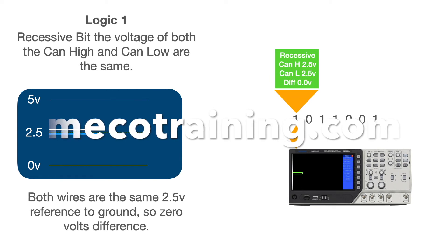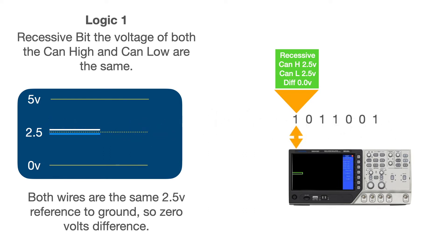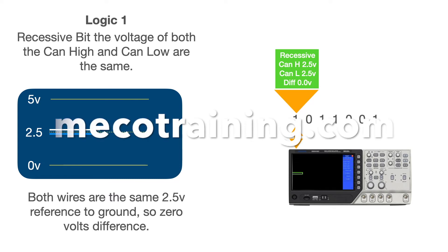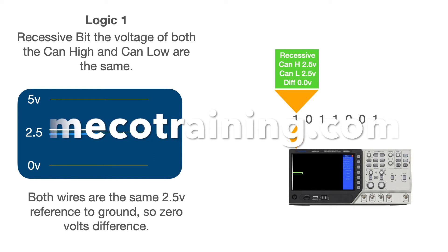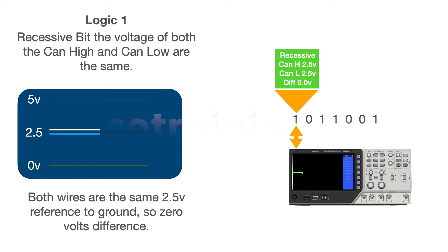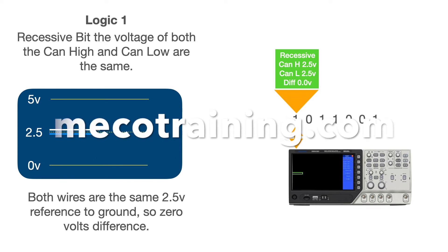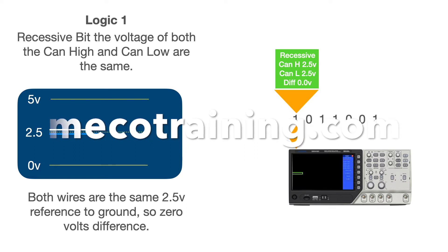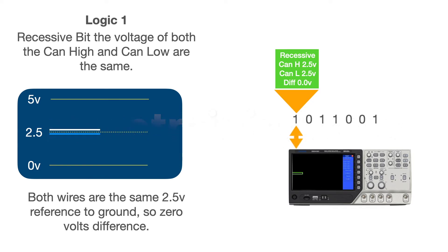After the start bit, the next bit in our example is a logic one. On a NMEA 2000 bus, logic state one is represented by a recessive state on the bus — named so because the voltage difference between CAN High and CAN Low data wires is actually zero. Whilst both CAN High and CAN Low wires on the bus are 2.5 volts above ground, they are both the exact same voltage, so no difference exists between them. During the transmission of a logic one, the voltage difference between CAN High and CAN Low is zero and the bus is said to be in a recessive state.